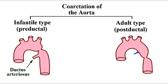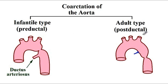In this video, I'm going to differentiate between the infantile type and the adult type of the coarctation of the aorta. The infantile type is most commonly associated with pre-ductal coarctation, while the adult type is associated with post-ductal.